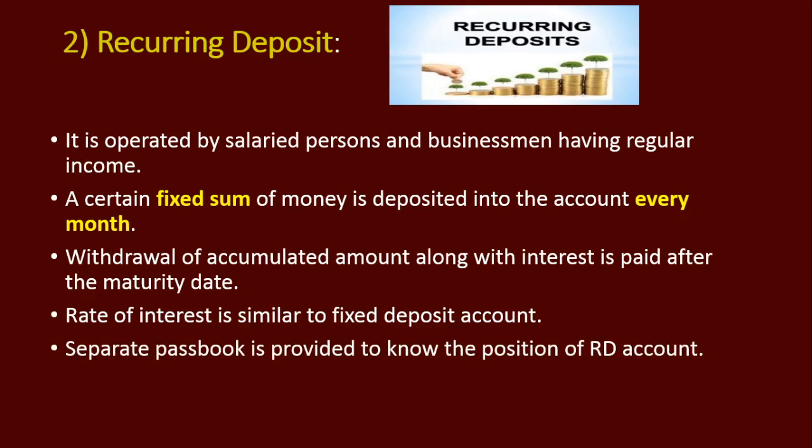A passbook is provided to track the recurring deposit account, showing which months you have paid. In fixed deposit, you pay a lump sum amount only once and withdraw it after the maturity date. Whereas in a recurring deposit account, the amount is paid every month and the monthly deposit amount always remains the same.